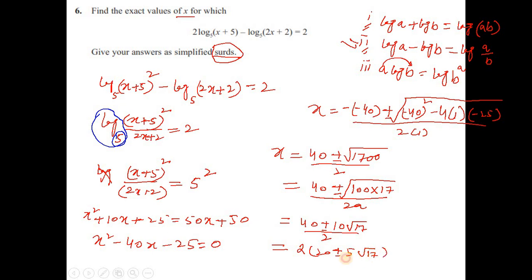Now you can see that in the numerator you have a 2 as a factor. Now we can cancel this 2, and then finally we have the answer: x = 20 ± 5√17.